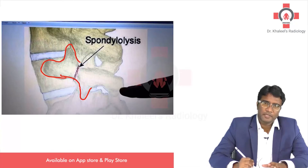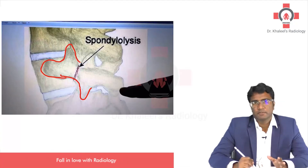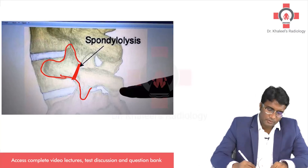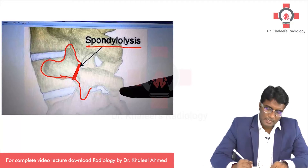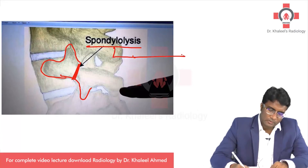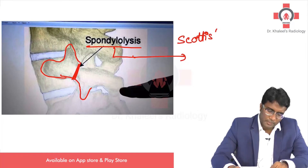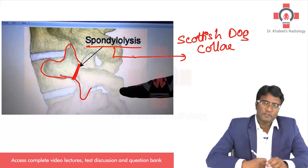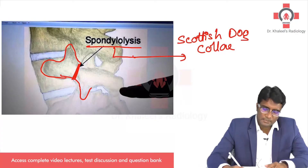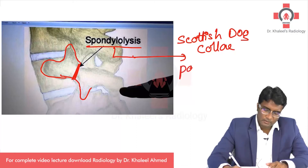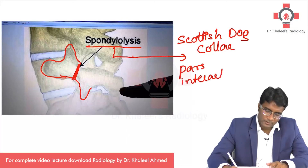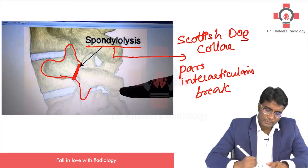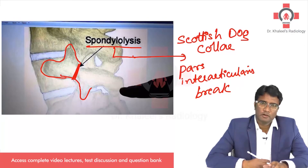Scottish dog appearance is a normal appearance on a posterior oblique lumbar spine X-ray. If you have a break in the pars interarticularis, you call it spondylolysis, and this will appear like a Scottish dog collar. Scottish dog collar sign is a feature of spondylolysis — that is, a break in the pars interarticularis.